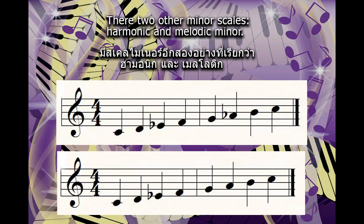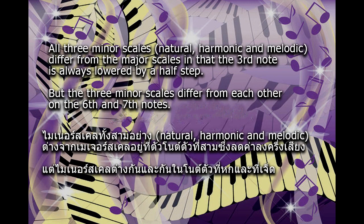There are two other minor scales: harmonic and melodic minor. All three minor scales — natural, harmonic, and melodic — differ from the major scales in that the third note is always lowered by a half step. But the three minor scales differ from each other on the sixth and seventh notes.